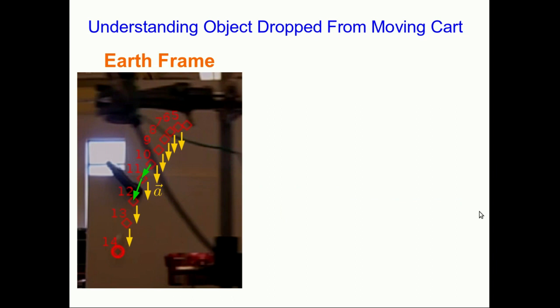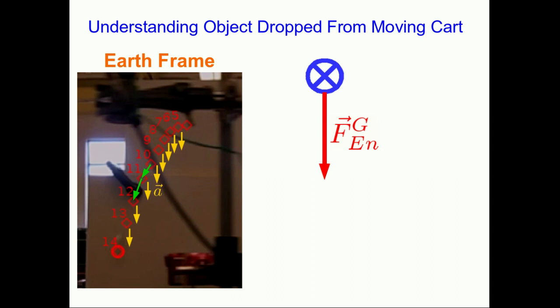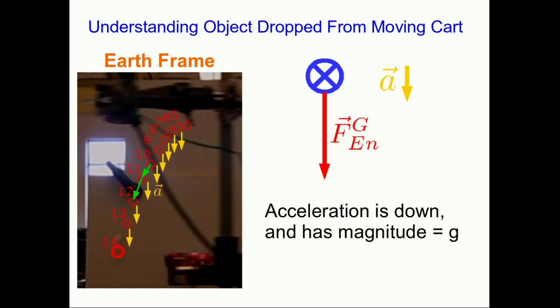There's another way to understand it that's probably easier. Think of the free body diagram of the object after it's released. It's not touching anything, and it's not moving that fast, so air drag can't be very important. The only force acting on it is a gravitational force due to the earth, and that points down. So the vector sum of forces is down, and the acceleration must be down. What's more, we know this is free fall, so the acceleration should be straight down with a constant magnitude equal to g.